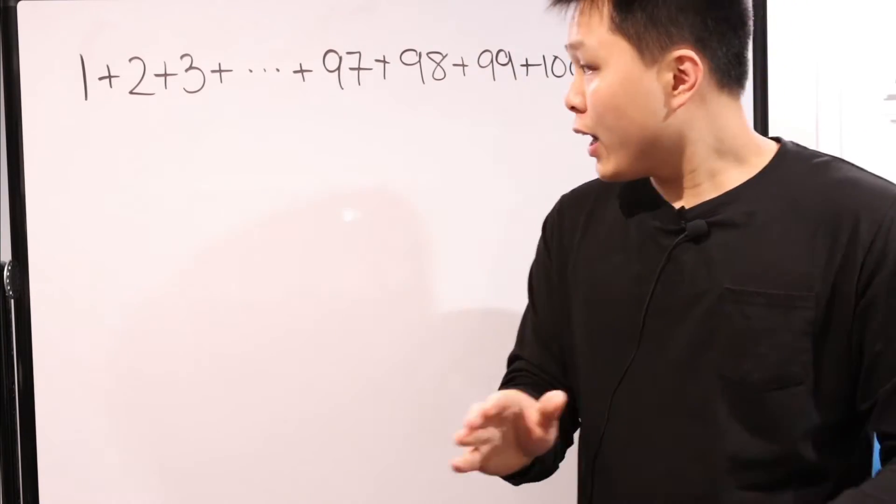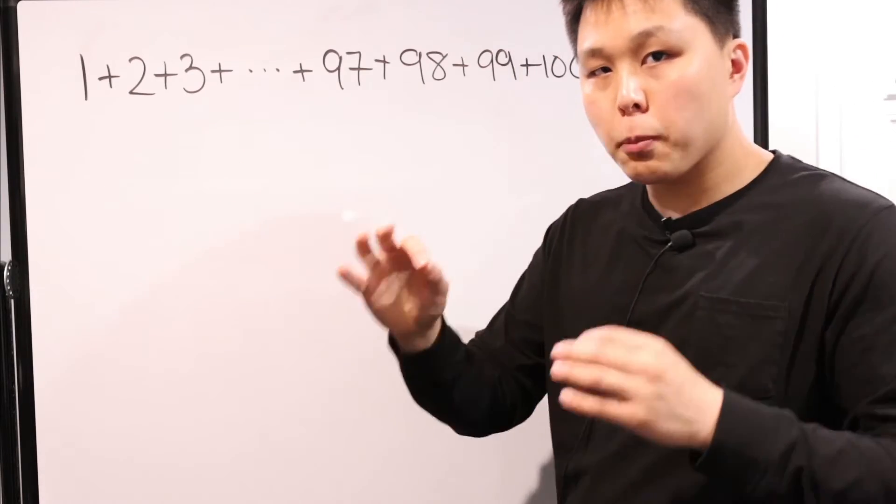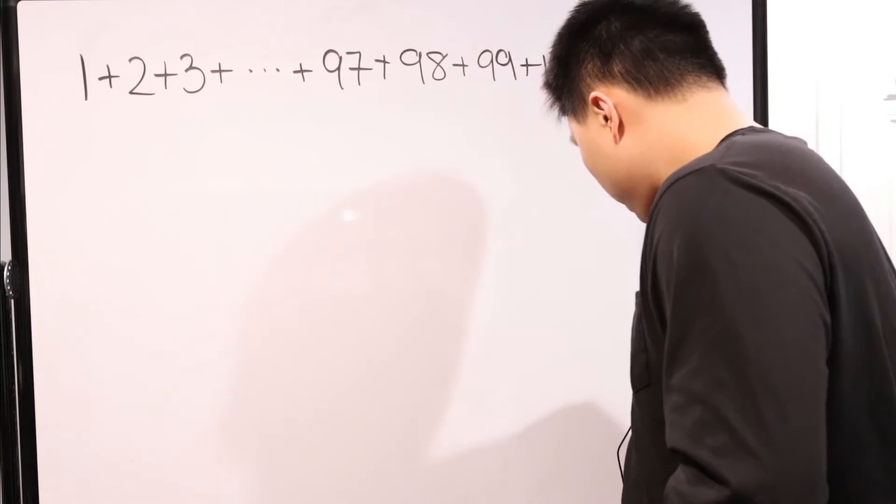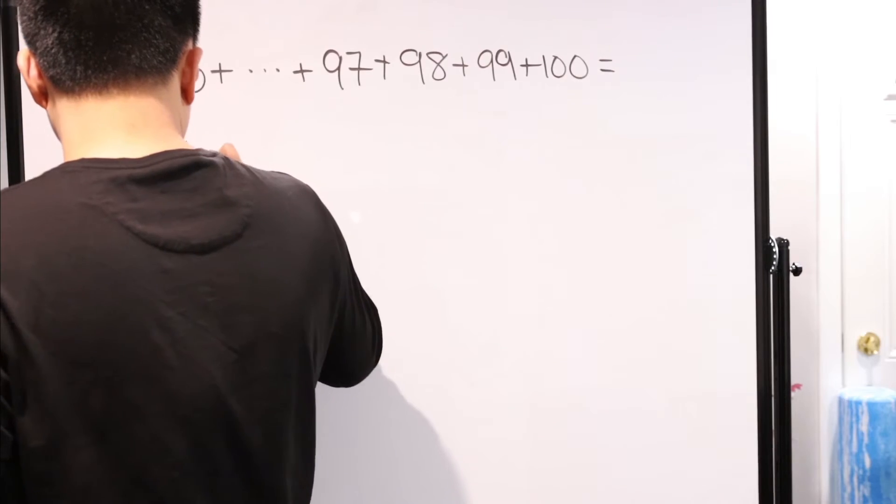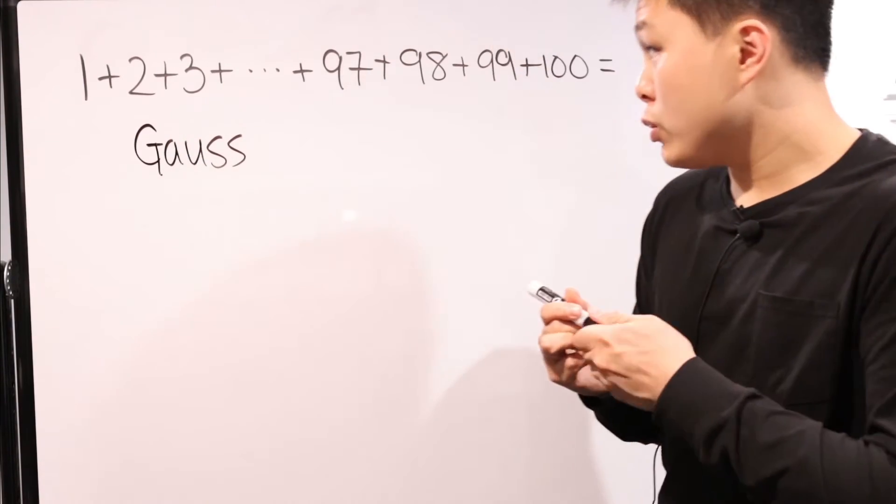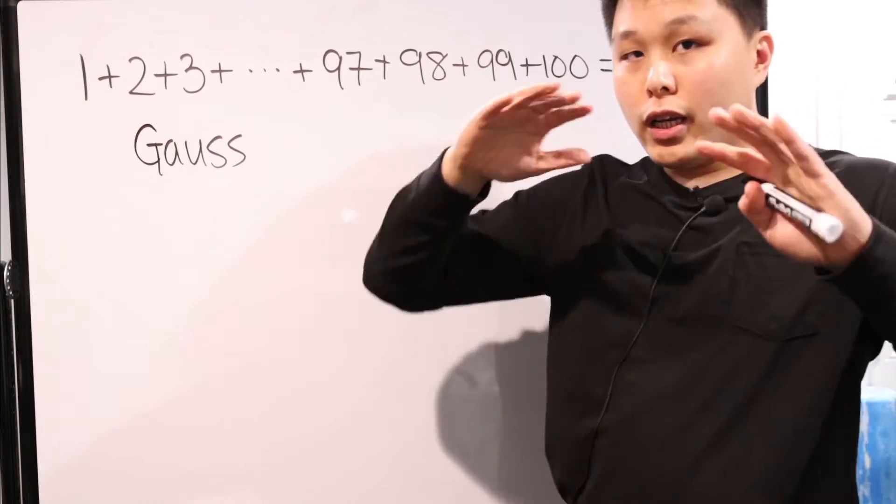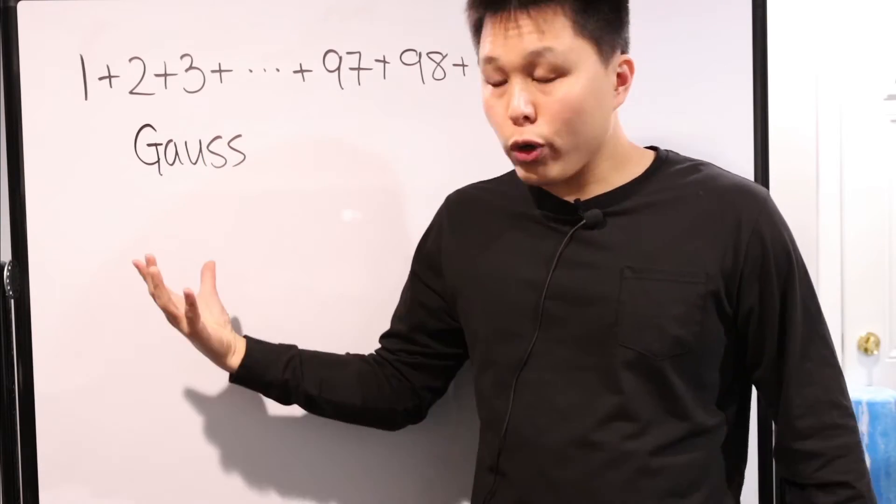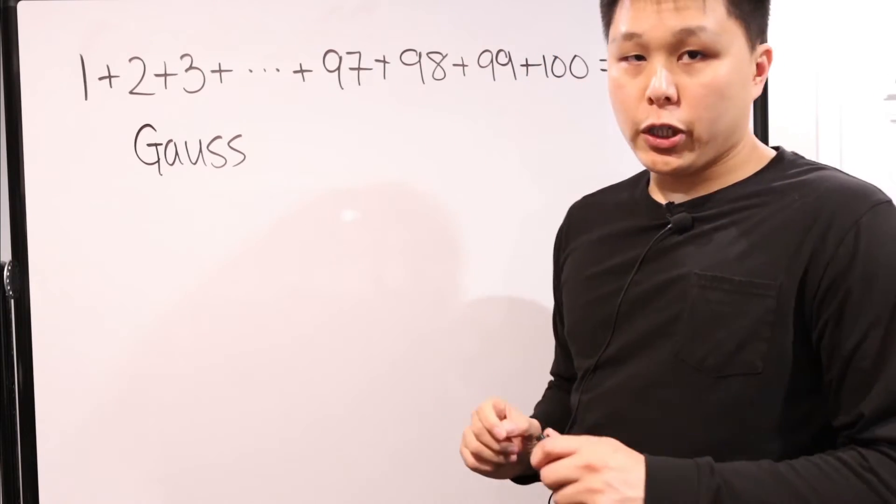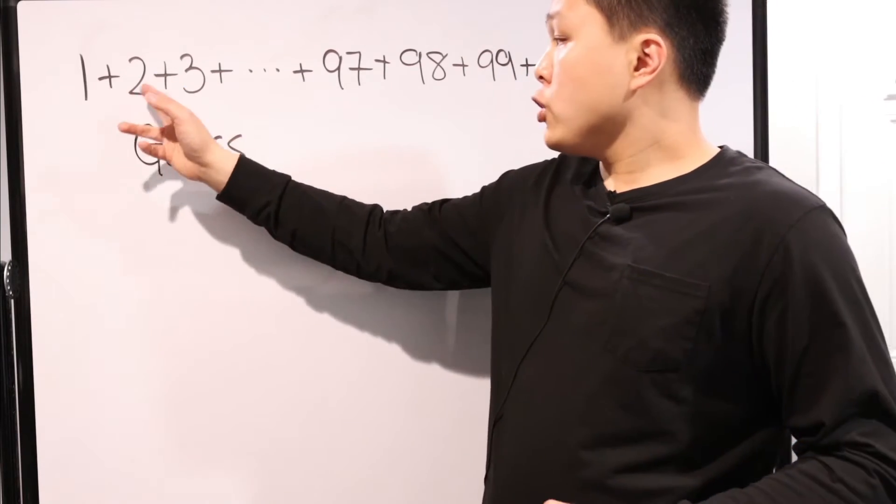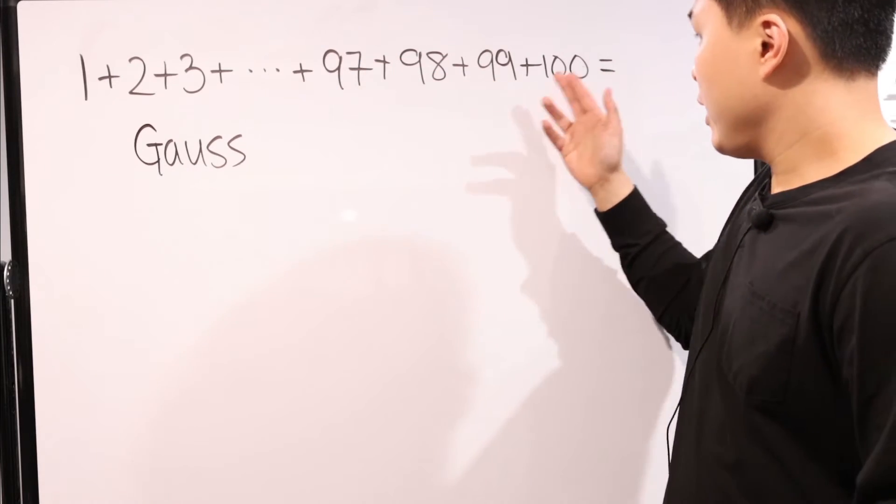So for today's video, I want to talk about this problem. Now I've talked about this problem before just for the sheer beauty of how it was solved. This was solved by a person named Gauss. Hopefully I spelled this correctly. Or at least it was known that he was the one who figured out a shortcut to solve this. So the history or the story is that basically Gauss's instructor gave him and every one of the students that he had this particular problem: 1+2+3+ and so on and so forth, all the way until you add 97+98+99+100, and you're trying to find the final answer for this.